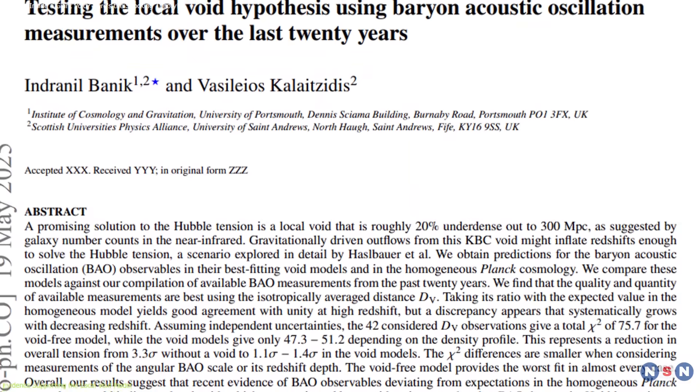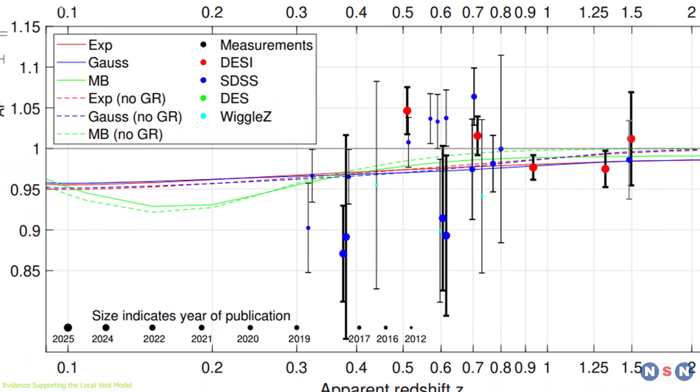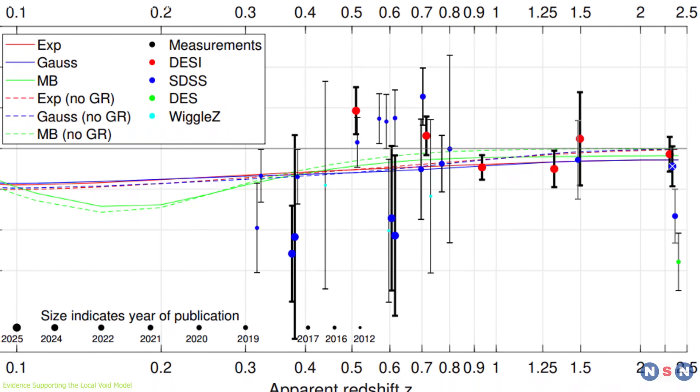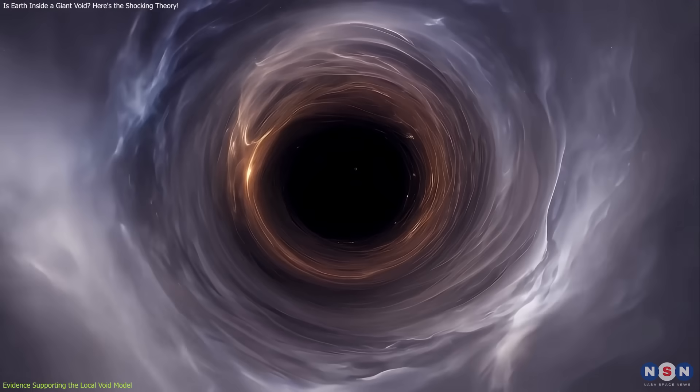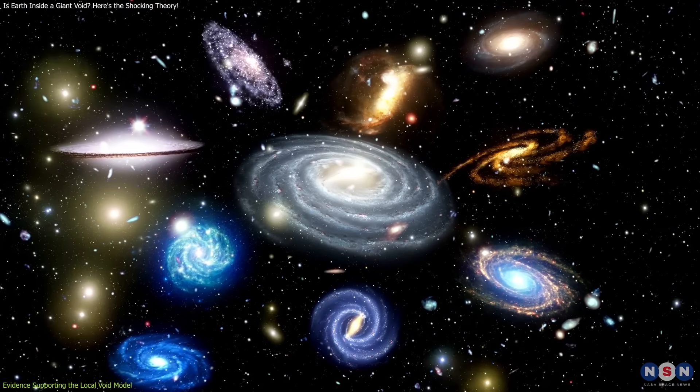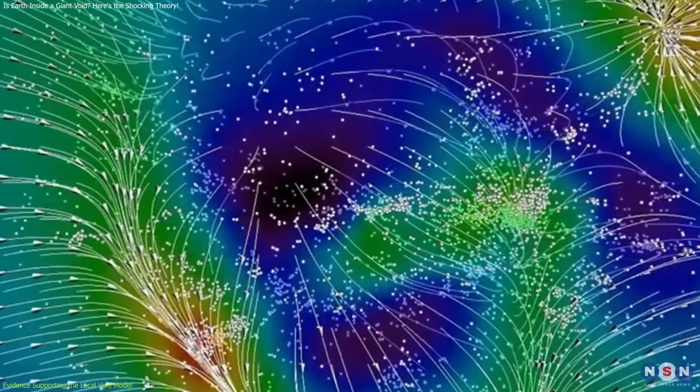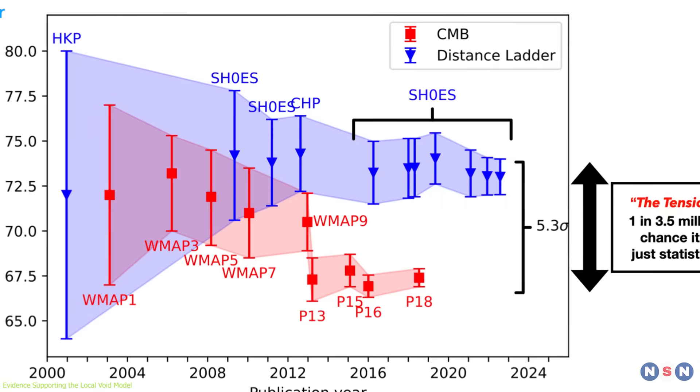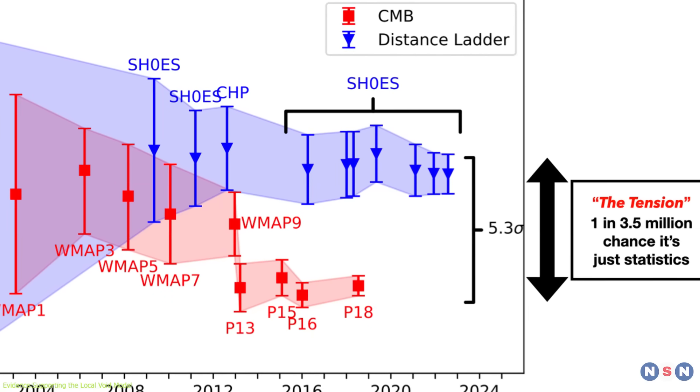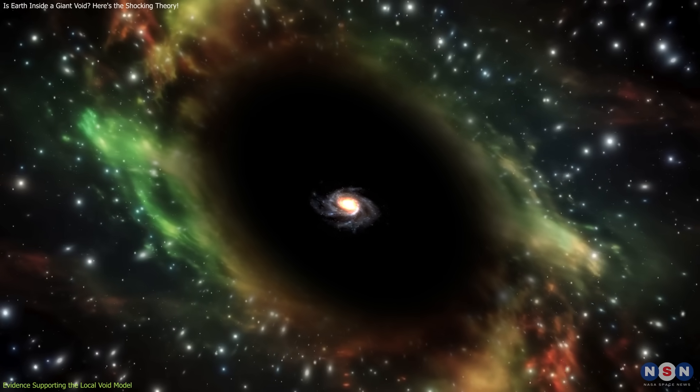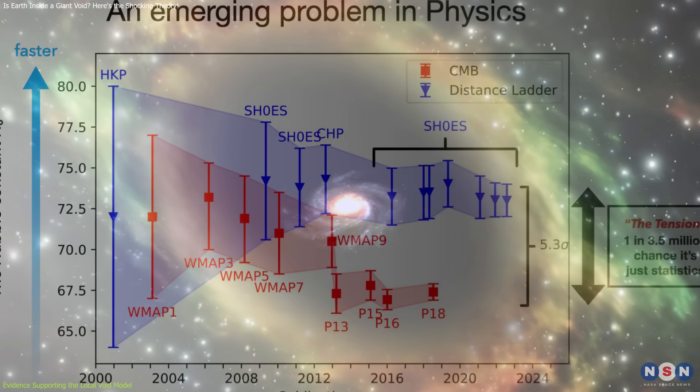This is exactly what Dr. Bannick's team found in their analysis. By examining BAO data collected over the past two decades, the researchers found that models incorporating a local void fit the data much better than those assuming a homogeneous universe. Specifically, the local void model reduced the statistical tension between the early universe and local measurements from 3.0 sigma to 1.0 sigma. This improvement suggests that the local void hypothesis offers a more accurate explanation of the observed discrepancies.